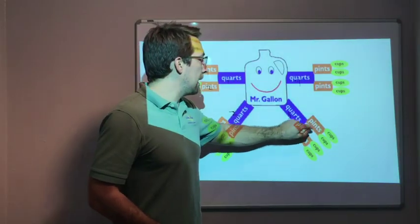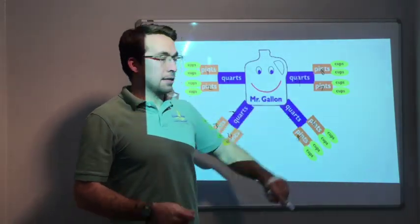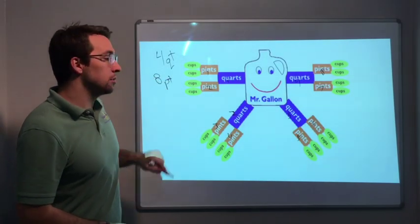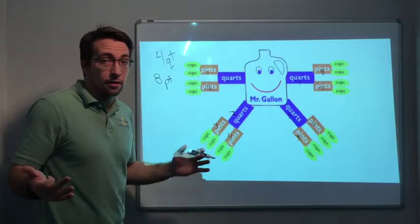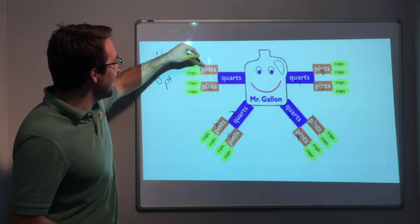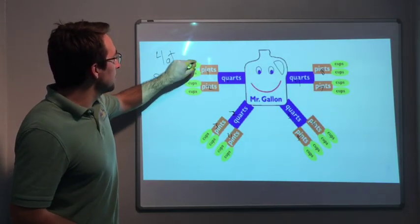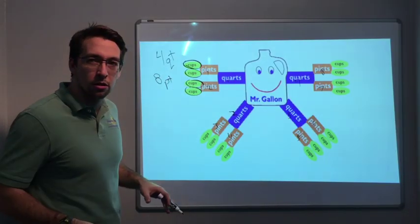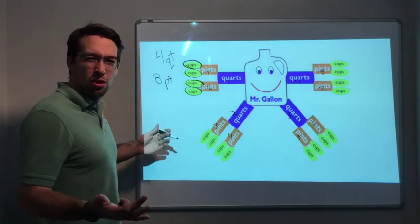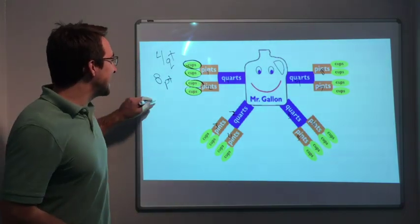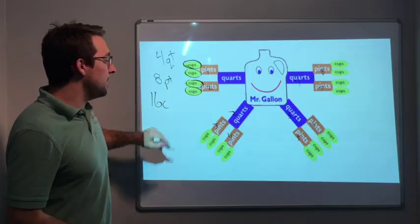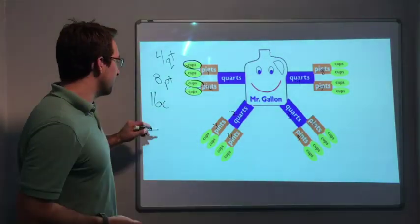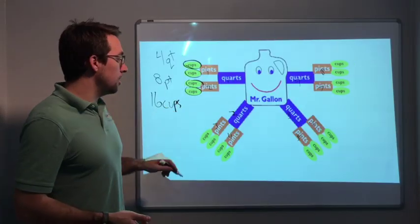And then look, each pint has two cups coming off of it, right? So they're like little toes or little fingers. You have two arms, two legs, and this is your toes. So cups, 16 cups, right, equals one gallon. 16 cups equals one gallon.